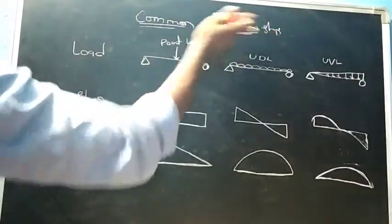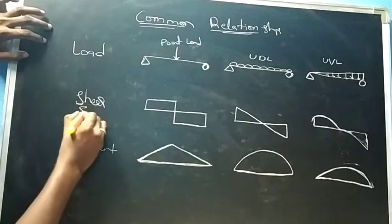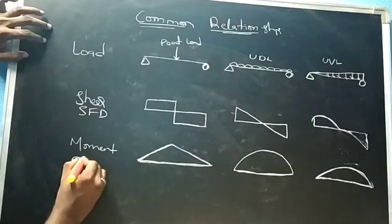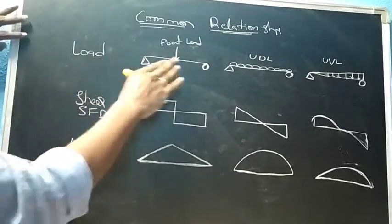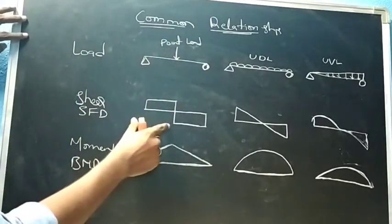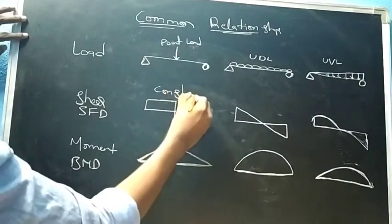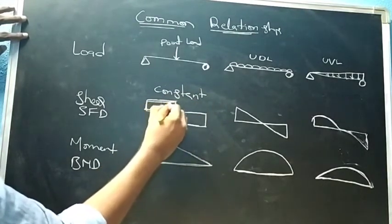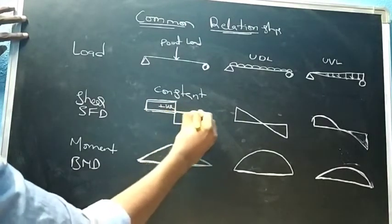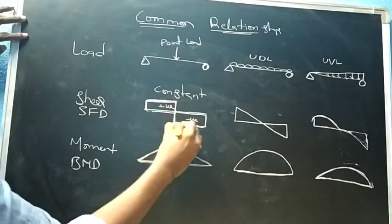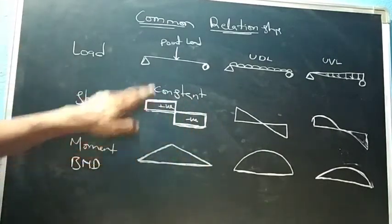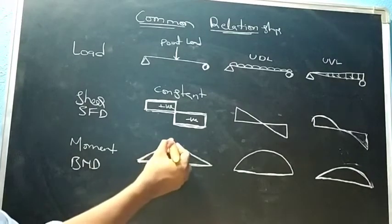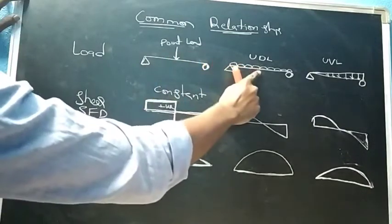Here are some common relationships between load, shear force diagram (SFD), and bending moment diagram (BMD). If the load is a point load, the shear force diagram will be constant — positive on one side and negative on the other — and the bending moment diagram will be a triangle.